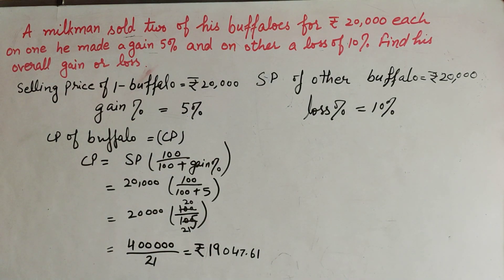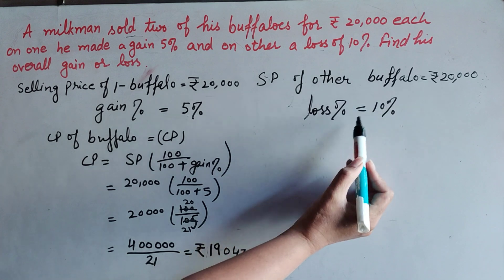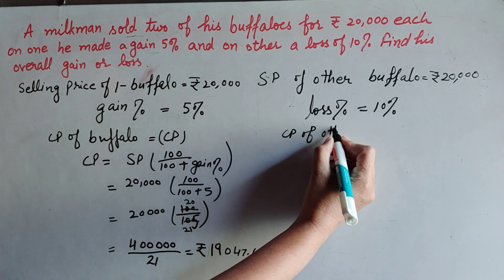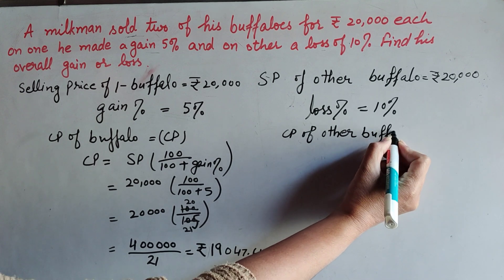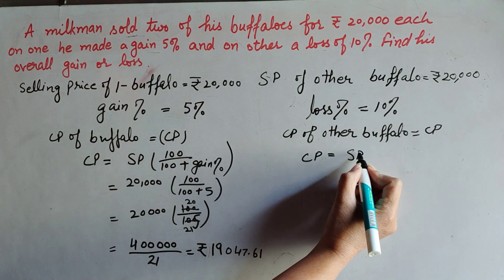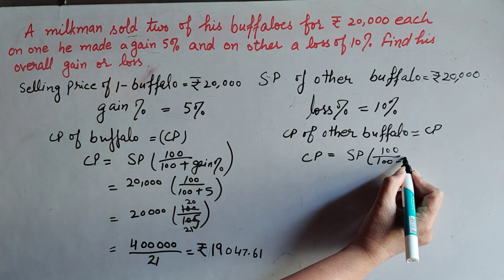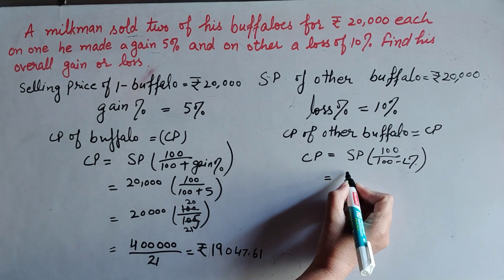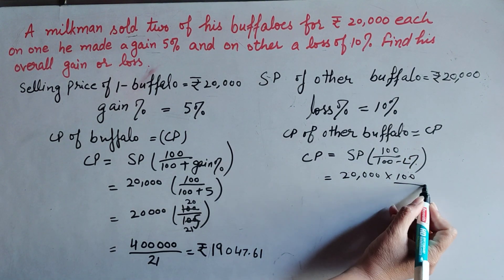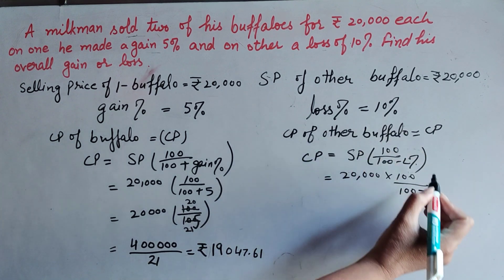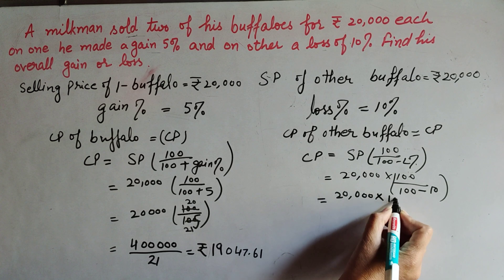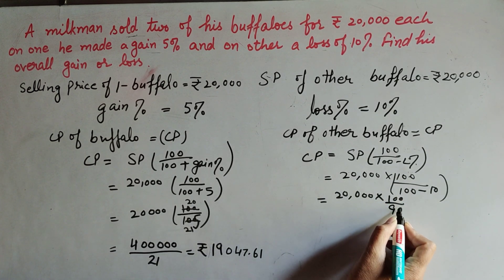Now we find the cost price of the other buffalo. The selling price is also 20,000 and the loss is 10%. The formula to find cost price with a loss is: CP = SP × 100 / (100 − loss%). So cost price = 20,000 × 100 / (100 − 10) = 20,000 × 100 / 90. The zero in the denominator and a zero in the numerator cancel out.